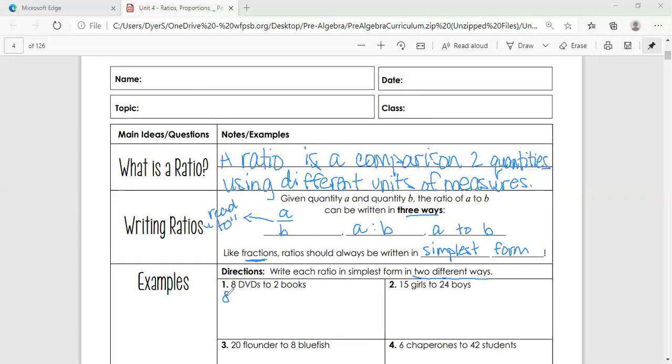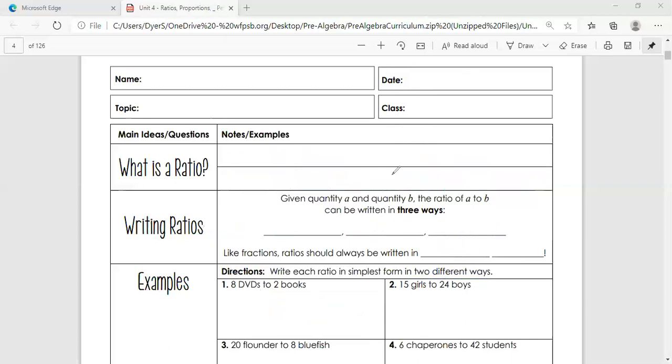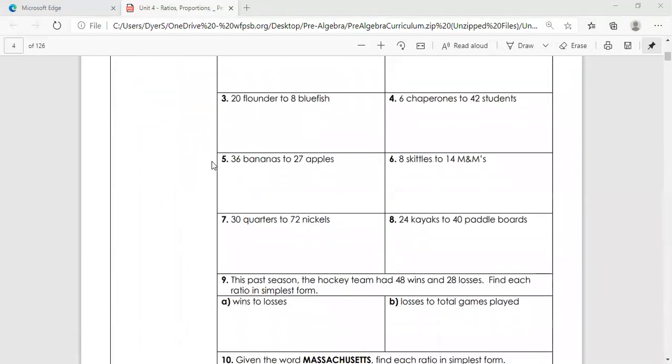So eight DVDs to two books. We're going to rewrite the original eight to two. Then we're going to simplify by finding that greatest common factor, which in this case happens to be two. So we're going to say eight to two is equivalent to four to one. Another way to write that is four to one. Four DVDs to one book. Another way of saying that is there's four DVDs for every book. So please make sure you have all that written down. Pause it if you need to, because we're going to have to erase it so that I can scroll up.